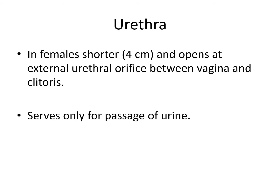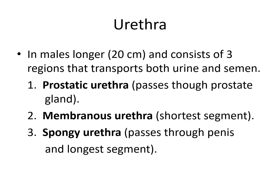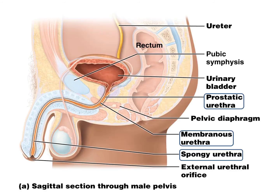The urethra is also different between sexes. In females, it's shorter and opens at the external urethral orifice between the vagina and the clitoris, serving only for the passage of urine. In males, it's longer and consists of three regions that transport both urine and semen: the prostatic urethra passing through the prostate gland, the membranous urethra as the shortest segment, and the spongy urethra passing through the penis as the longest segment, ending at the external urethral orifice.